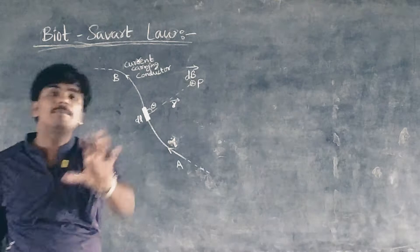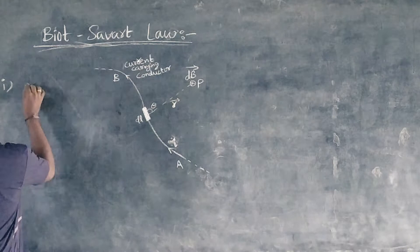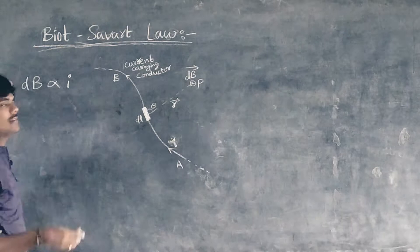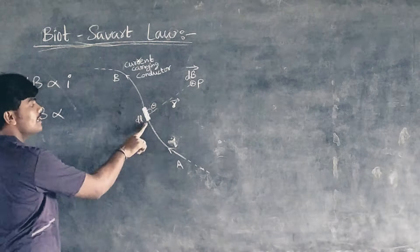What are those? First, it is directly proportional to the current I flowing through the conductor. Second, it is directly proportional to the length dl of one such element we considered.